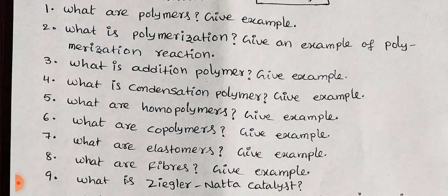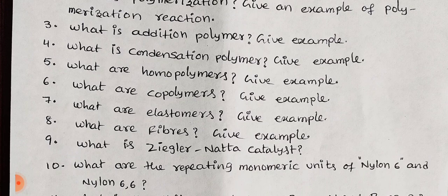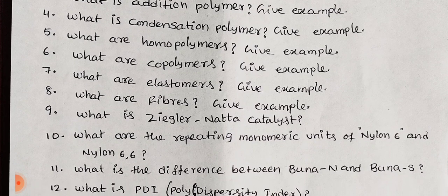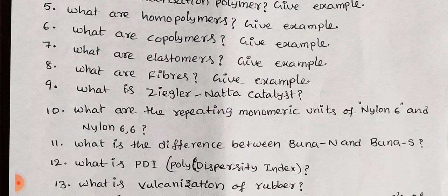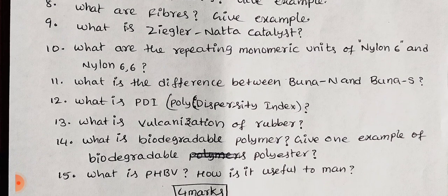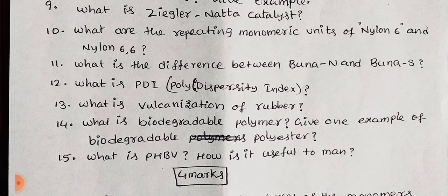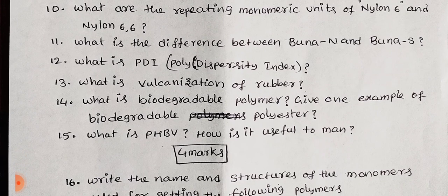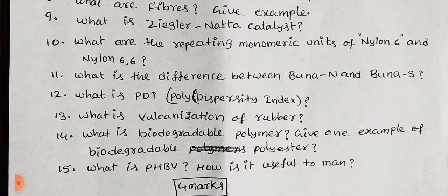We have polymers: addition polymers and condensation polymers, homo-polymers and co-polymers, elastomers, fibers. These are the number-off polymer topics. We have 2-mark quantity questions here, targeting around 50–55 marks maximum.